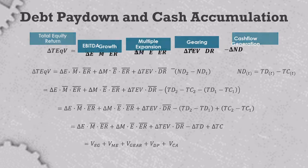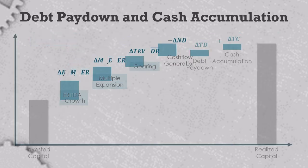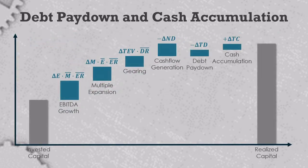When we run that through the model, we see that the negative delta ND term becomes minus delta TD plus delta TC. This allows us to measure cash flow generation as a combination of debt paydown and cash accumulation. Here's what it looks like in the value bridge chart. If total debt goes down and total cash goes up, then debt paydown and cash accumulation will be smaller components of a larger cash flow generation. It's not a terribly interesting breakdown in my opinion, but it's something that might be worth highlighting for a specific company or investment situation.